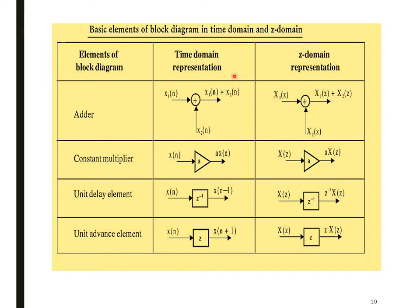The basic elements of a block diagram are: an adder, a constant multiplier, a unit delay element, and a unit advance element, each with time domain and Z domain representations. An adder takes two discrete signals X1(N) and X2(N) and outputs X1(N)+X2(N); in Z domain, X1(Z)+X2(Z). A constant multiplier takes input X(N), scales it by coefficient A, and outputs A·X(N); in Z domain, A·X(Z).